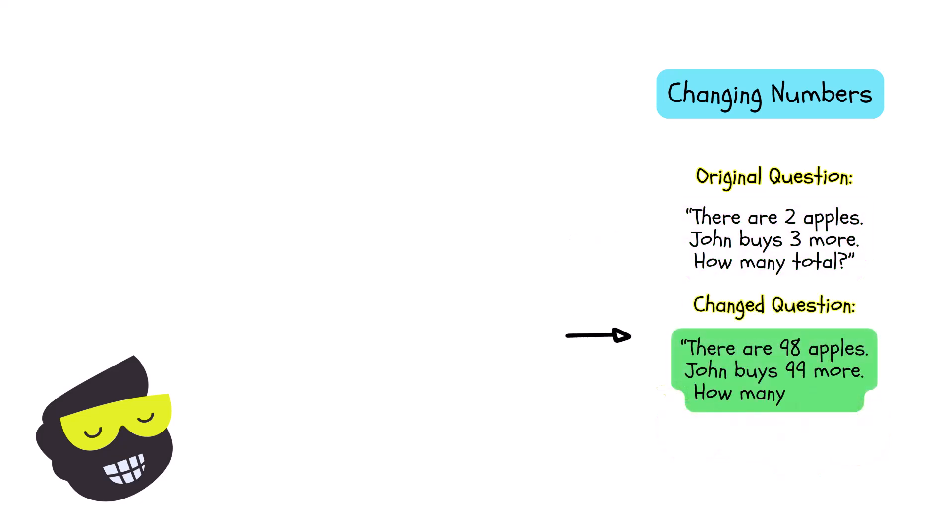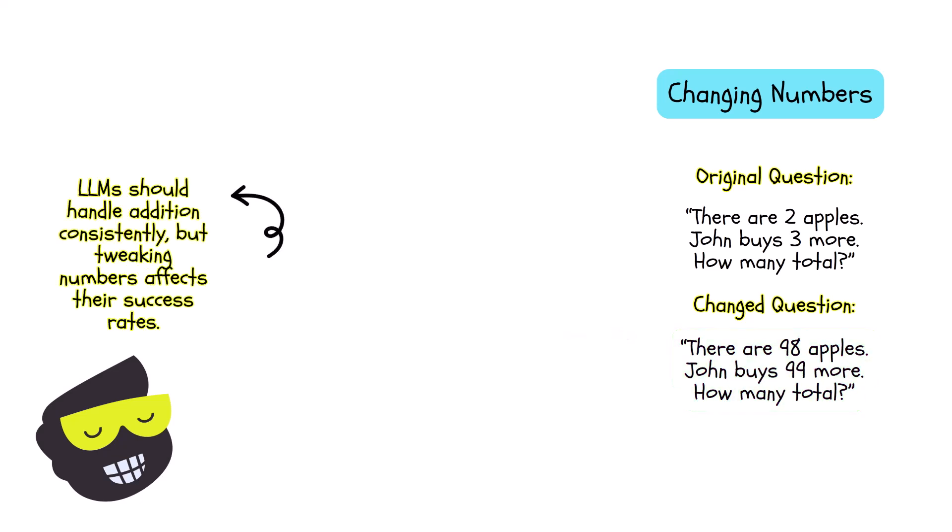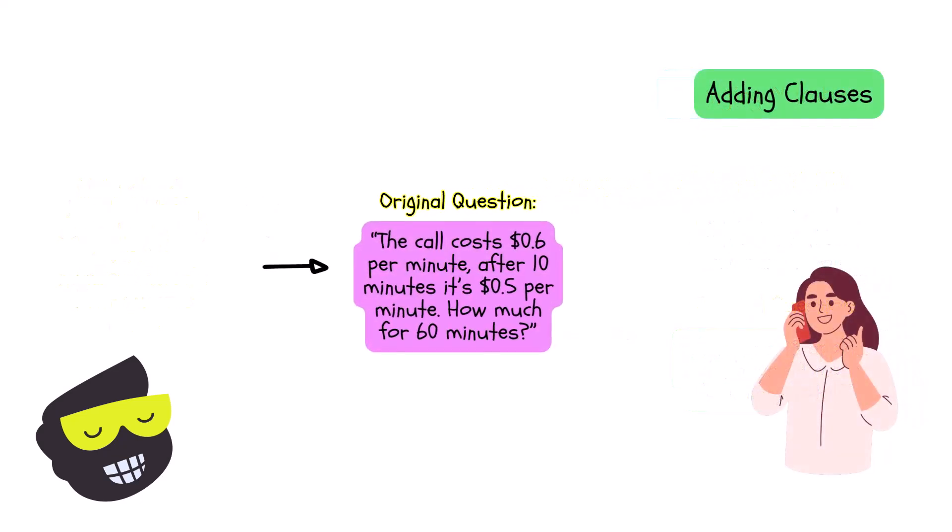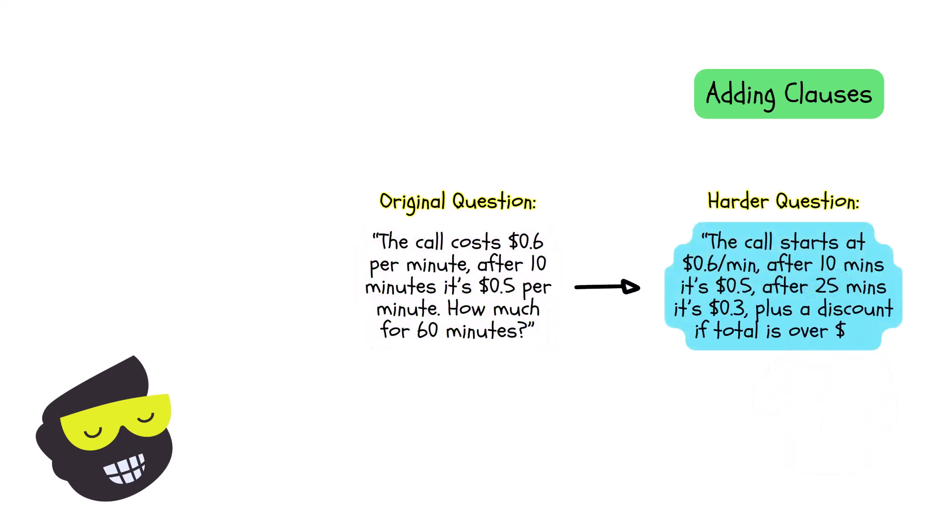You can also try adding clauses. The call costs $0.60 per minute. After 10 minutes, it's $0.50 per minute. How much for 60 minutes? Then we have a harder question. The call starts at $0.60 per minute, then after 10 minutes it's $0.50, after 25 it's $0.30 plus a discount if the total is over $10. Many LLMs have trouble stepping through multiple price changes, even though the actual math is still just addition and multiplication.